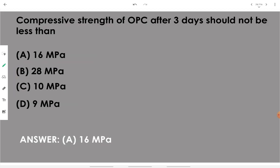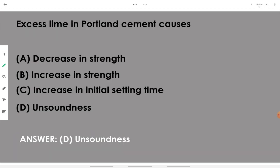Compressive strength of OPC after three days should not be less than 16 MPa. Remember: compressive strength of ordinary Portland cement after three days should not be less than 16 MPa. Excess lime in Portland cement causes unsoundness — if lime's contribution is more than specified, it will cause unsoundness in the cement.